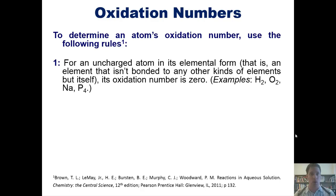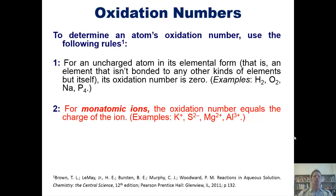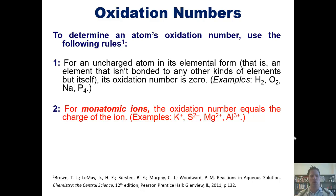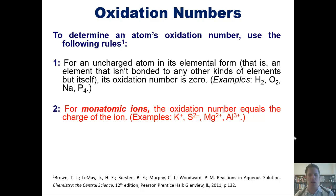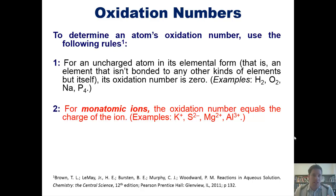Two: for monatomic ions — that is, you have a single atom that is an ion, it's got a charge of some sort — the oxidation number of that atom is equal to its charge. Examples include K+, S2-, Mg2+, and Al3+. In each of these examples, you've got a single atom that has a charge — that is, it's a monatomic ion. Each of these would have an oxidation number of plus one, minus two, plus two, or plus three, respectively. That is equal to their individual charges.